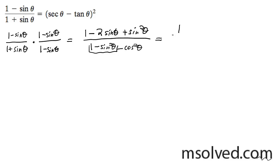you end up with 1 over cosine squared theta minus 2 sine theta over cosine squared theta plus sine squared theta over cosine squared theta.